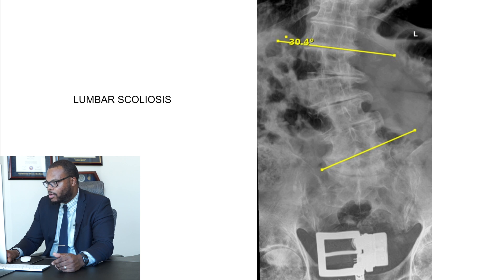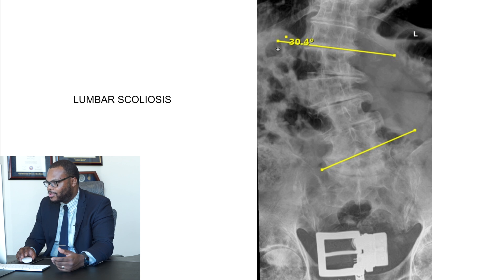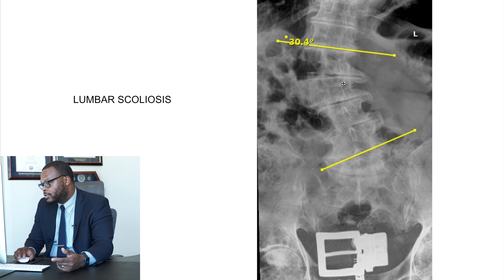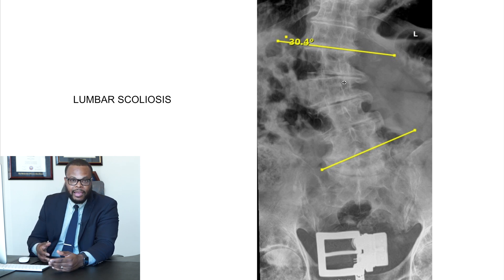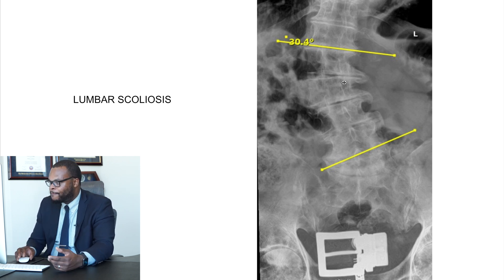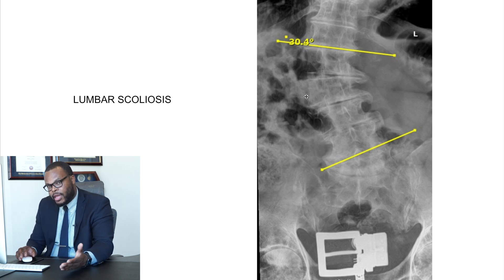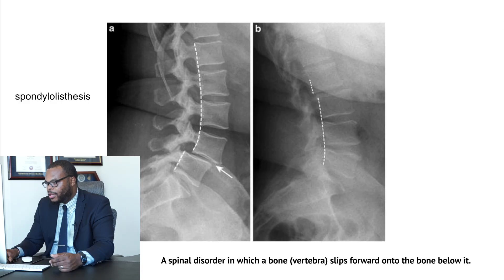This is a lumbar scoliosis. This patient has about a 30-degree scoliosis going to the right side. You can see this can certainly press on some nerves and cause some compression into the spine that can shoot pain down the legs when they walk, along with lots of back pain. A lot of patients with lumbar scoliosis we can certainly treat — just because you have a scoliosis does not mean you need surgery. Most of it can be treated with conservative treatment unless those things fail.